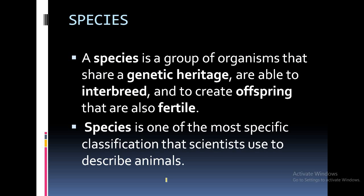Now, what is a species? There are three basic points. Species is a group of organisms which share a common genetic heritage — their genetic makeup or genome is similar. They can interbreed among themselves, and they produce fertile offspring. Species is the smallest and most specific level of classification that scientists use to describe organisms.